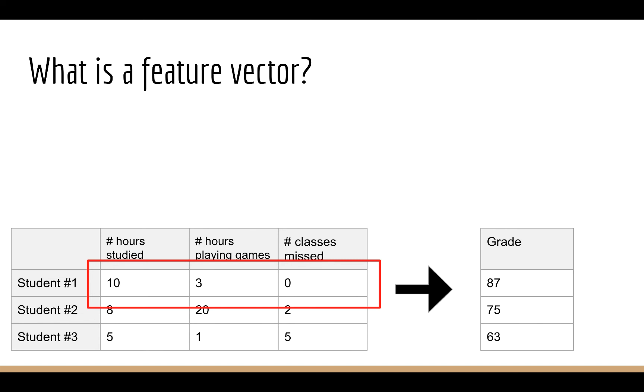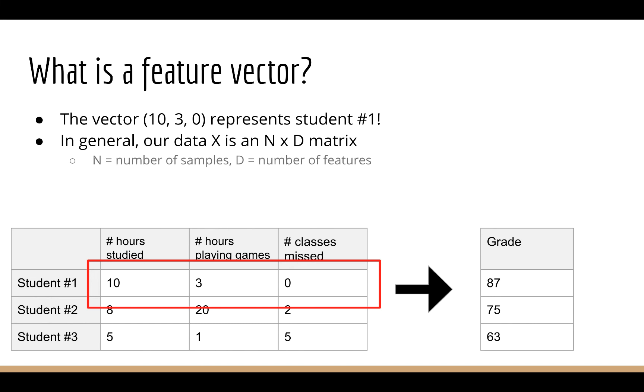So now that we know what a vector is, what is a feature vector? Well, we've looked at many examples of this in the last few lectures. One of my favorite examples is predicting someone's exam grade. To do this, we have a table of inputs. Remember, this is an n by d matrix, where n is the number of samples, and d is the number of features.